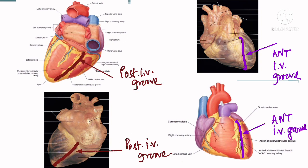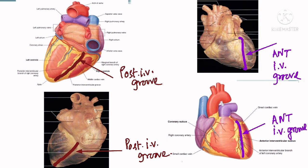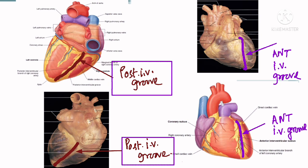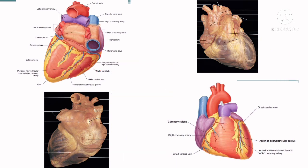The anterior and posterior interventricular sulci separate the right and left ventricles. The anterior interventricular sulcus is seen from the sternocostal surface and lodges the anterior interventricular artery and great cardiac vein. The posterior interventricular groove lies on the diaphragmatic surface and lodges the posterior interventricular artery and middle cardiac vein. The meeting point of the interatrial groove, posterior interventricular groove, and posterior part of the atrioventricular groove is termed the crux of the heart.